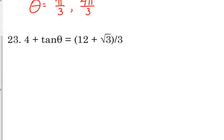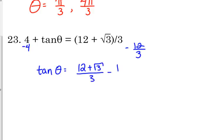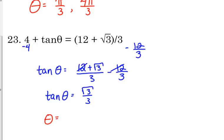Number 23 looks a bit nasty but it's really not that bad — it's got that weird expression on the right side, but the same premise applies. We need to subtract 4, expressing it as 12/3. That gives us tangent(θ) = (12 + √3)/3 − 12/3. Since 12 minus 12 is 0, we have tangent(θ) = √3/3. If π/3 angles give √3, then π/6 angles give √3/3 — it's the reciprocal. So the solutions are π/6 and 7π/6.